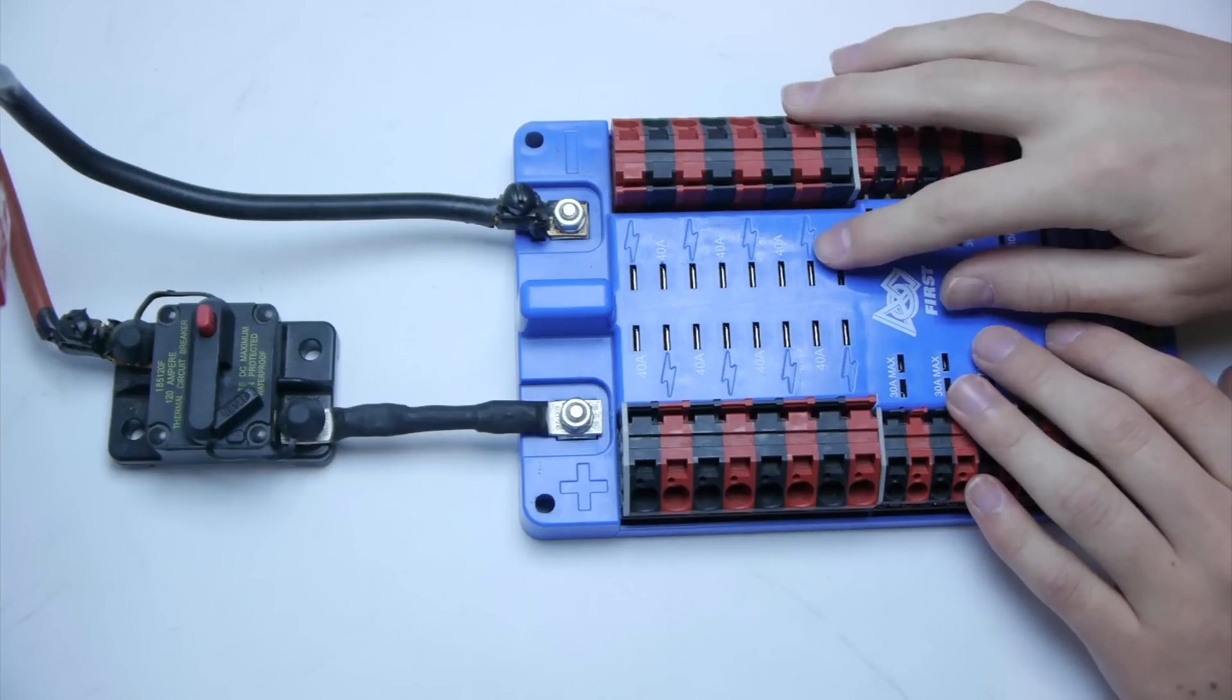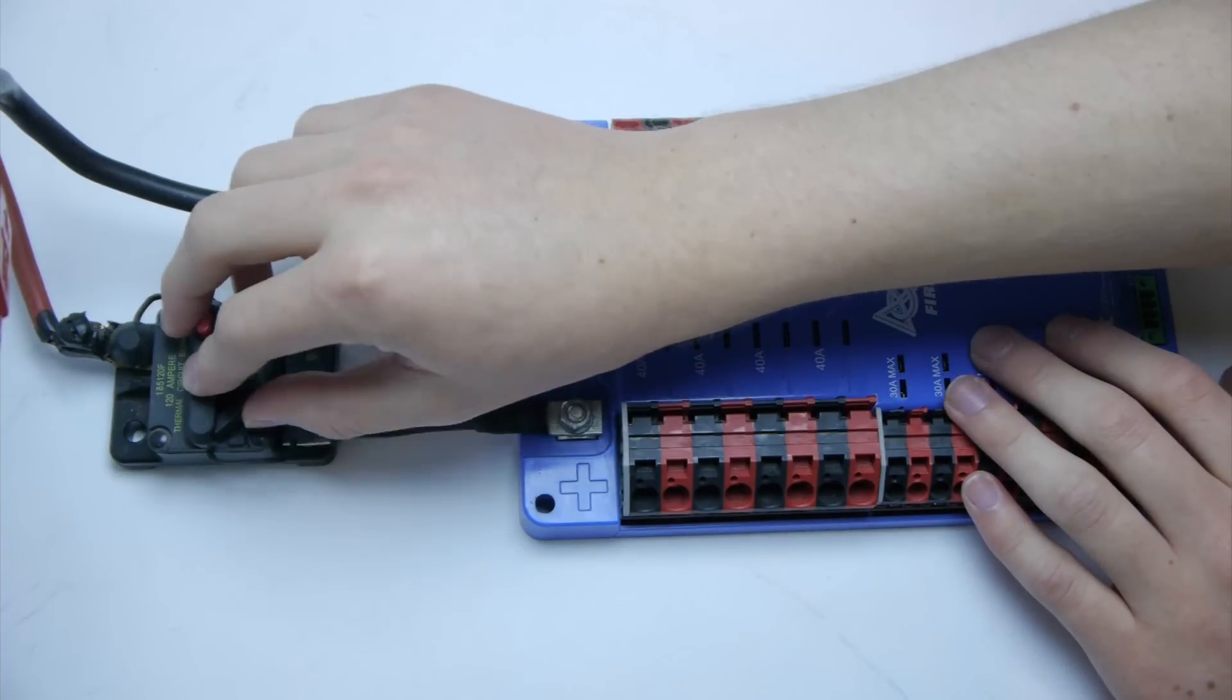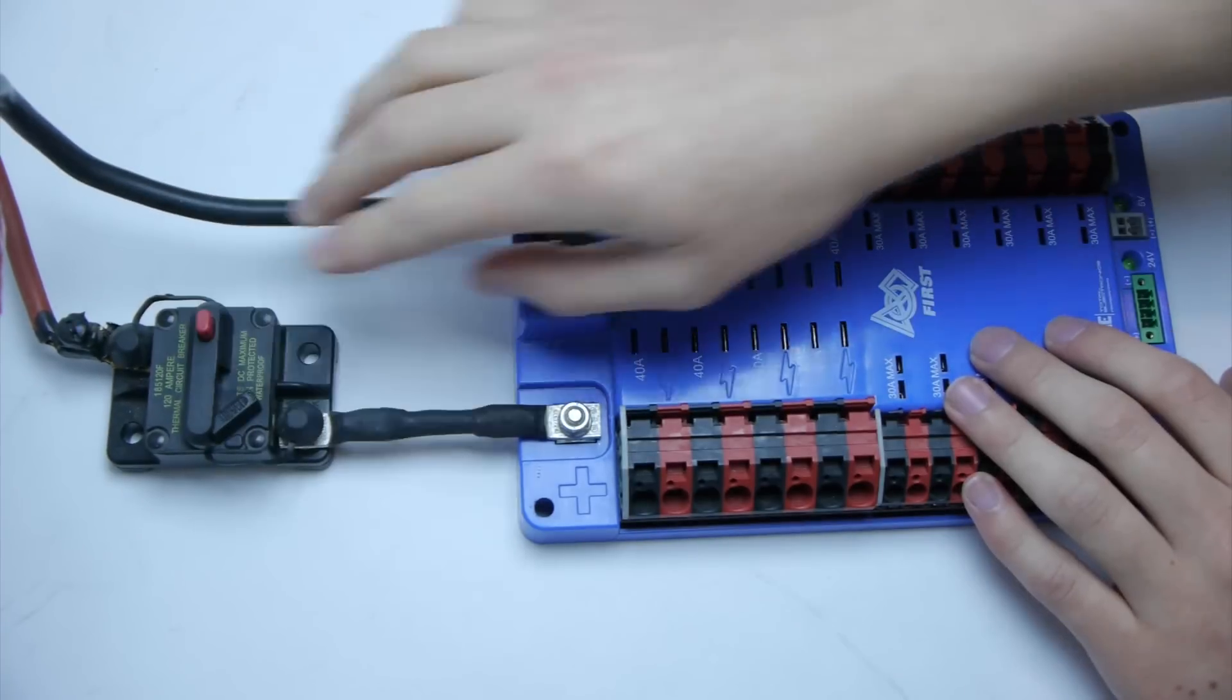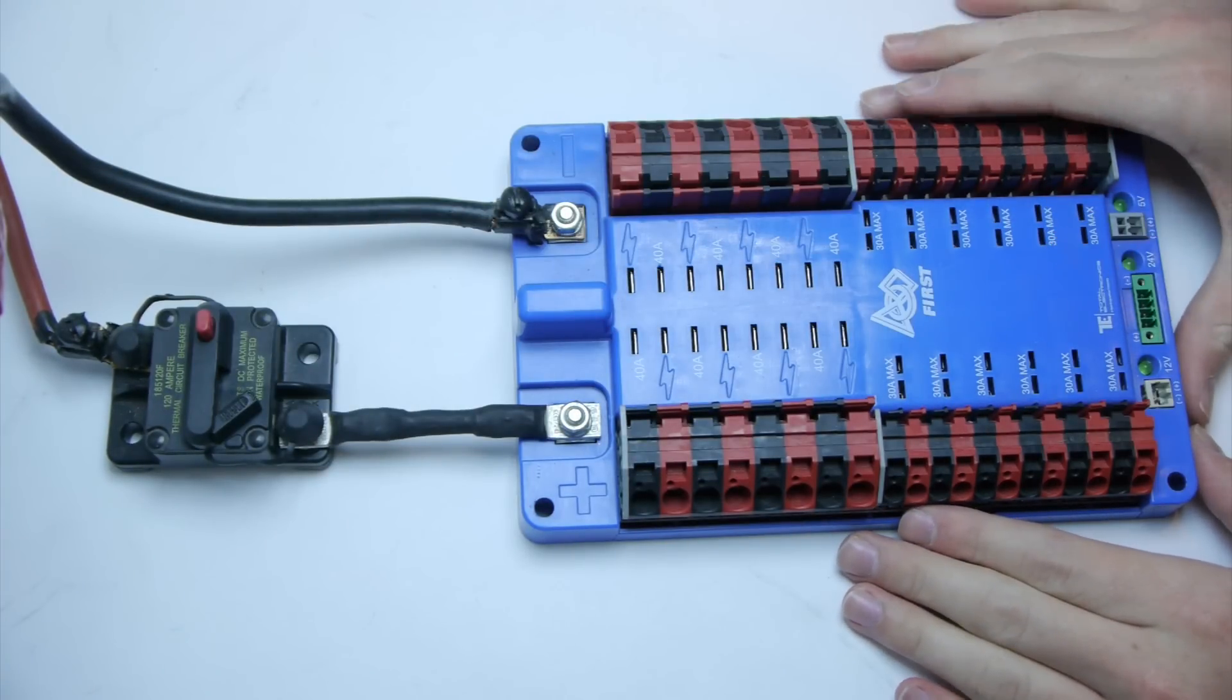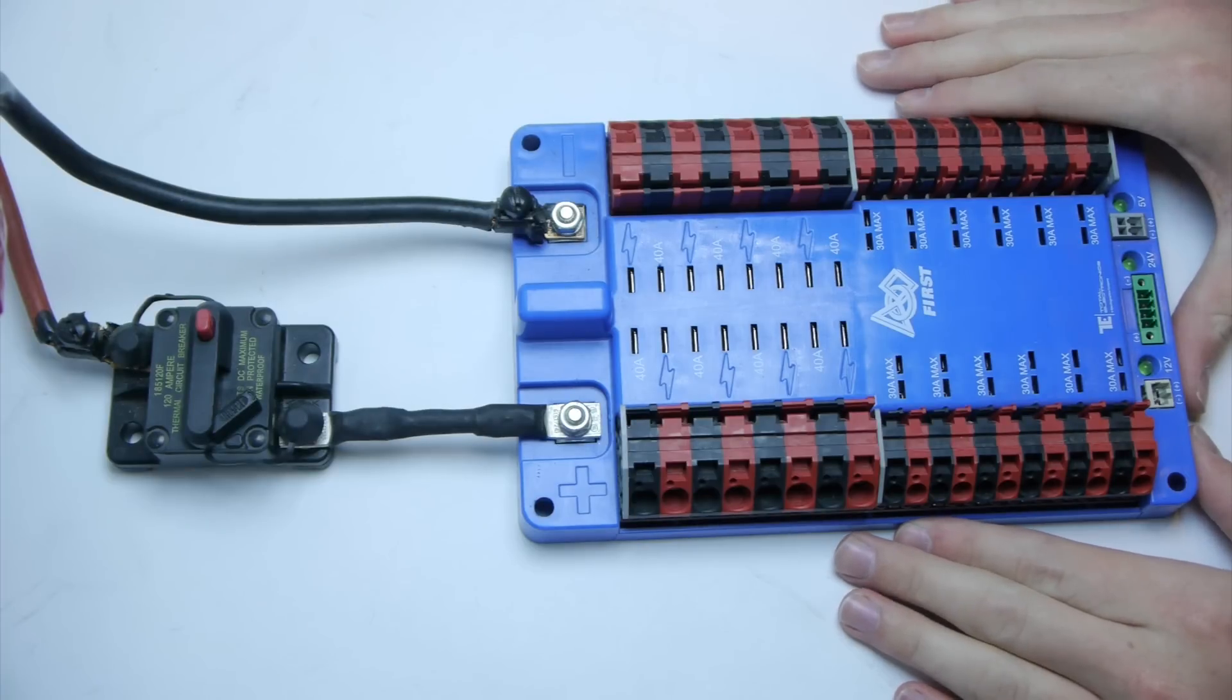In this video, we'll be going over the power distribution board and main 120-amp breaker. As the name suggests, the power distribution board distributes power to all the components of your robot.